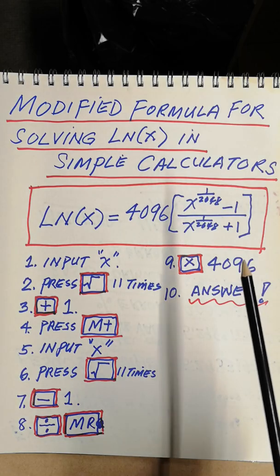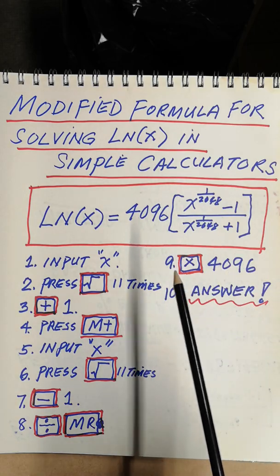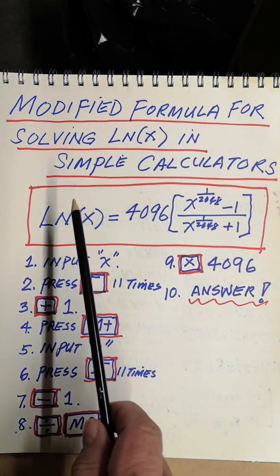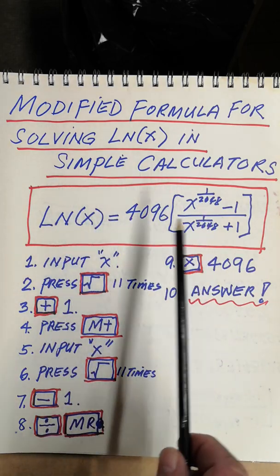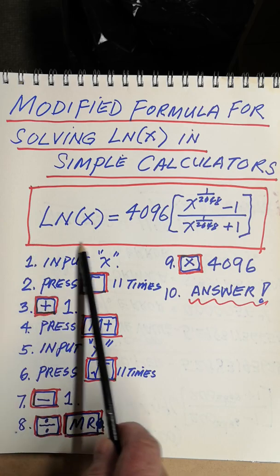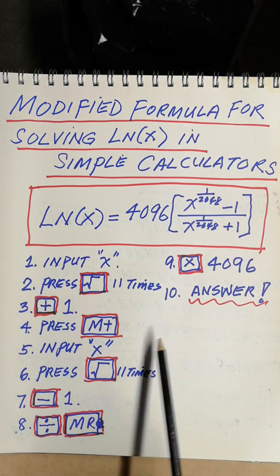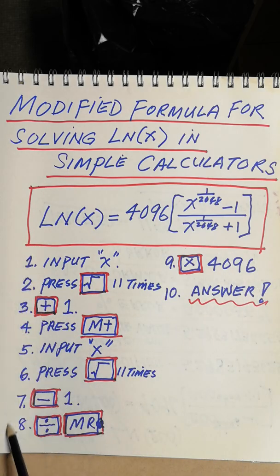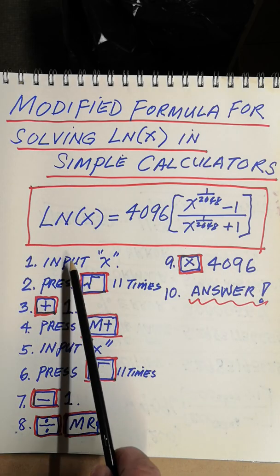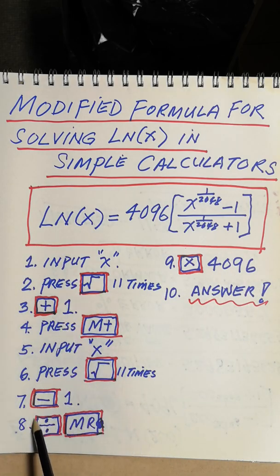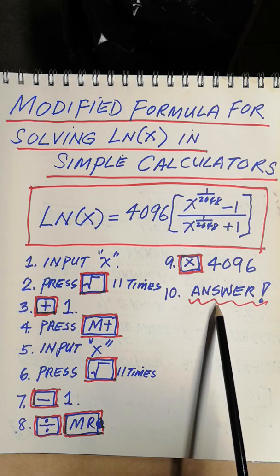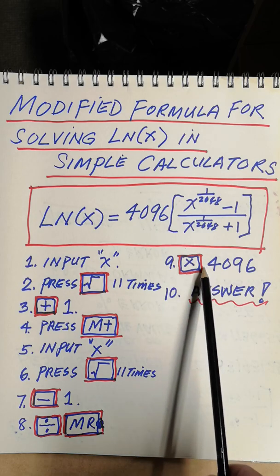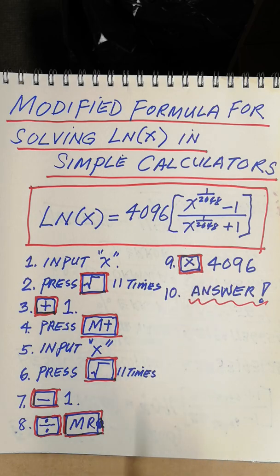This is the modified formula for solving ln of x in a simple calculator. This is the formula, and these are the steps from 1 to 10 — the steps you need to make to solve it in the calculator.